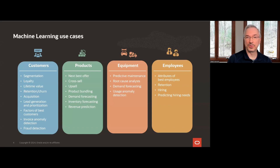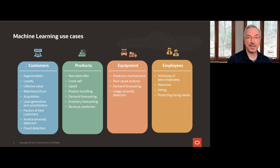So what can you do with machine learning? We often think of industry-specific vertical use cases, but there are surprisingly many use cases that cut across industries — what I call horizontal use cases. Most enterprises have customers, products, equipment, and employees. For customers, use cases range from customer segmentation to fraud detection. For products, what products should we recommend? Perhaps we want to forecast demand, inventory, and revenue.